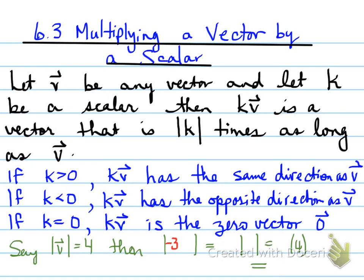Let's say I change that. Let's say the magnitude of vector v is 4, and I wanted to know the magnitude of negative 3v. What will that result in?